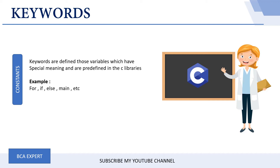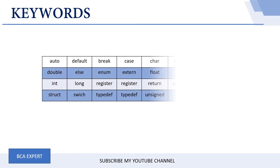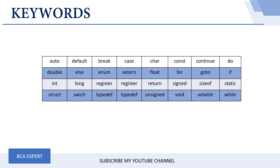You cannot access, redefine, or reprogram keywords. Some basic examples of keywords are: for, if, else, main, while, etc. Here is the complete description of all the keywords used in C programming language, which you cannot change the functionality of or rename. These are all predefined and loaded into the C libraries.